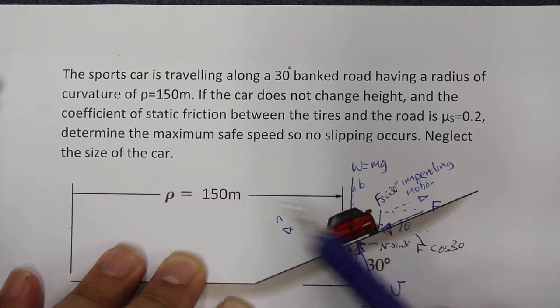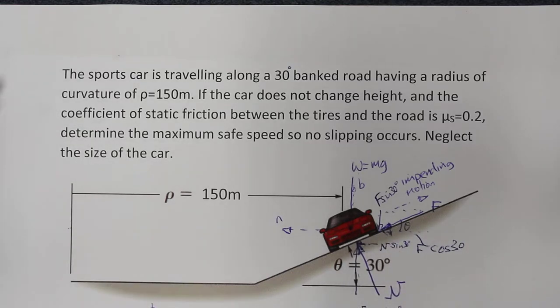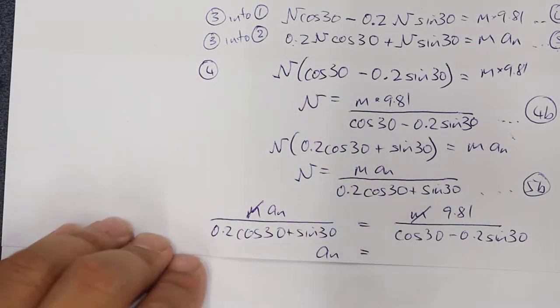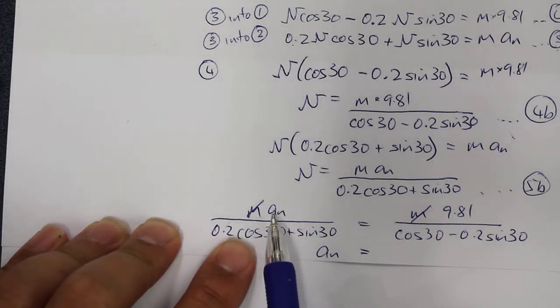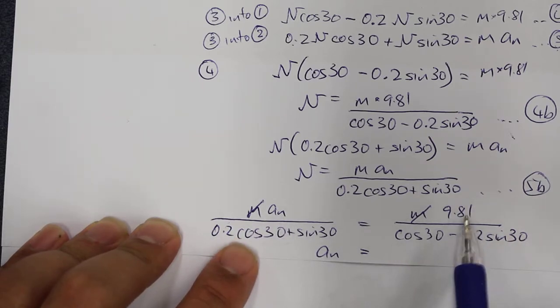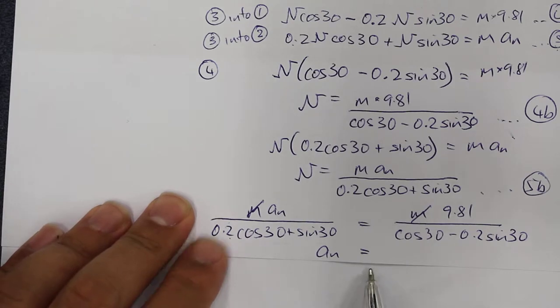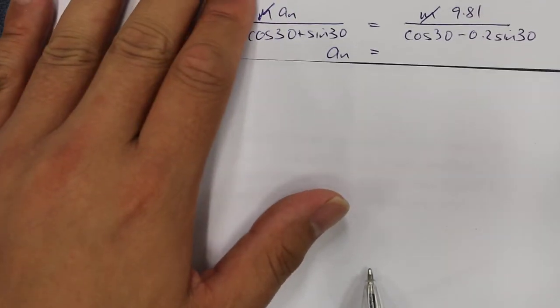Neglect the size of the car, so we're going to neglect the effect of the car tipping around a point. We've got a set of equations which we've worked through in the previous part of this video, and here we have a relationship between the acceleration in the normal direction, gravity, and the coefficient of friction. We're just going to continue to rearrange this equation to solve for the value of an.